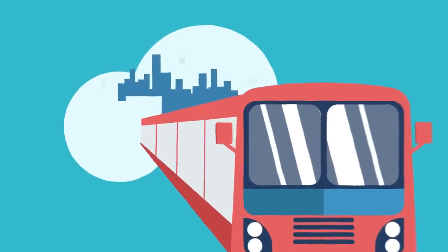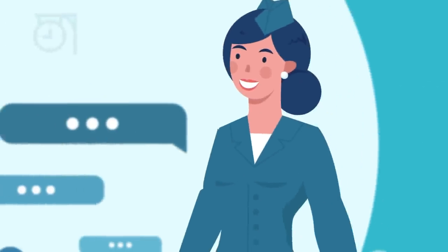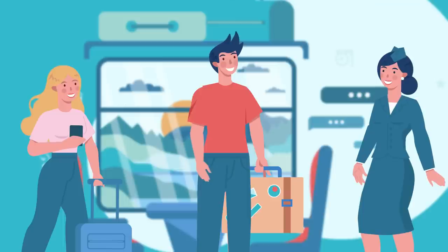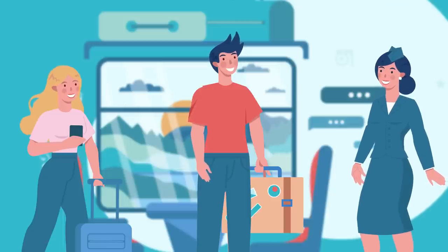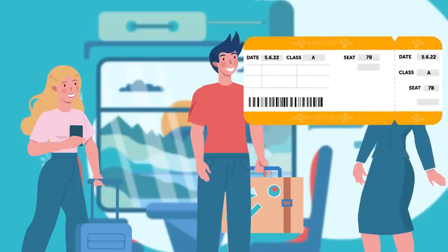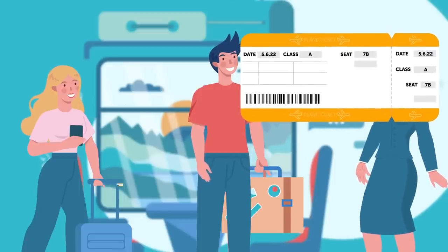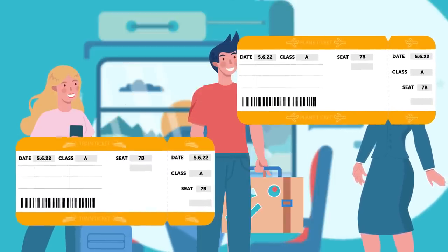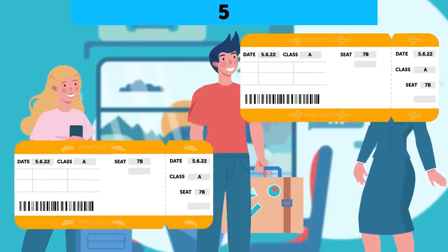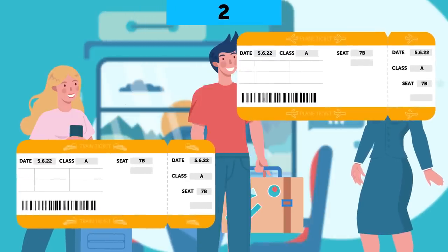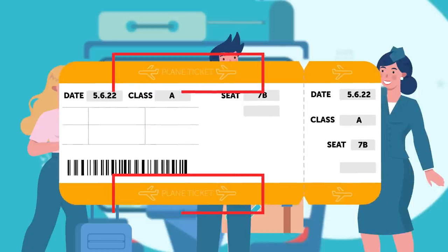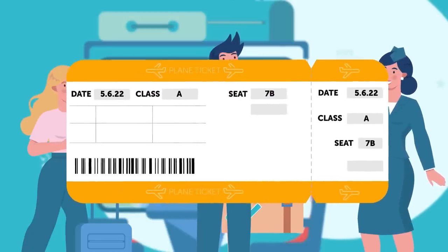A train finally leaves the station. The conductor starts checking the tickets. Two passengers, Mickey and Anya, hand him two tickets for the same seat. The first ticket belongs to Mickey Jones, seat 7B. Anya Roy is written on the second ticket, seat 7B. Who should sit in this place? Mickey Jones' document says plane ticket, and this is the train. The place belongs to Anya.